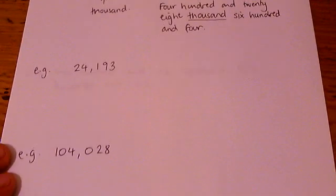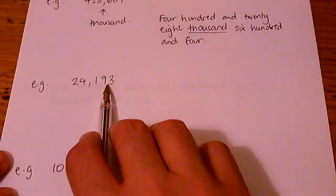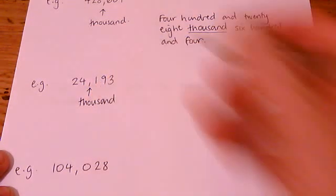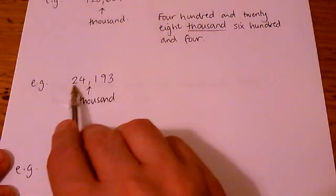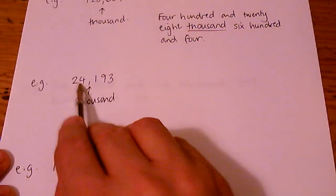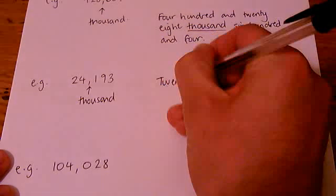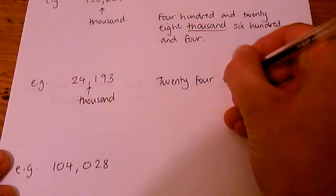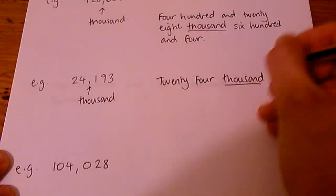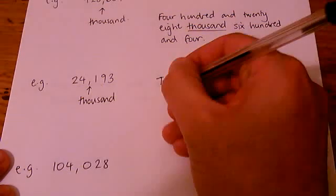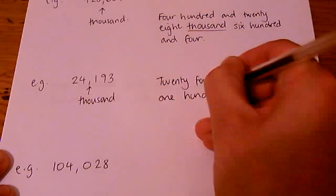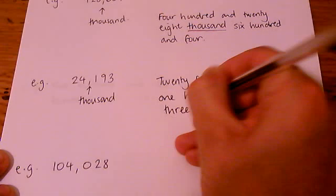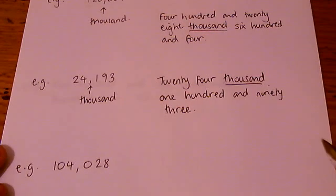If we try this next one, using the same rule, so working from the end of the number here, the first comma you get to is where we write the word thousand. So this is, if you look here, 24. Then the comma, which tells us to write the word thousand. And then this bit here, 193. 24,193.